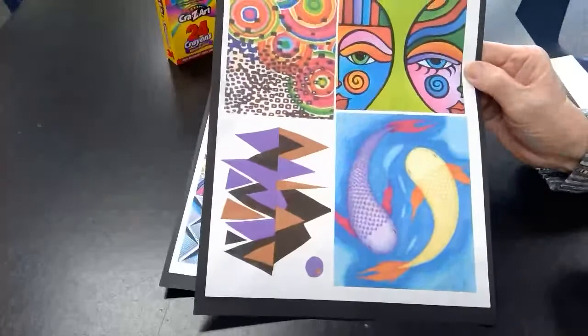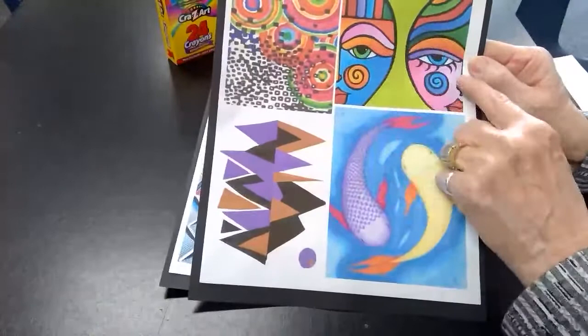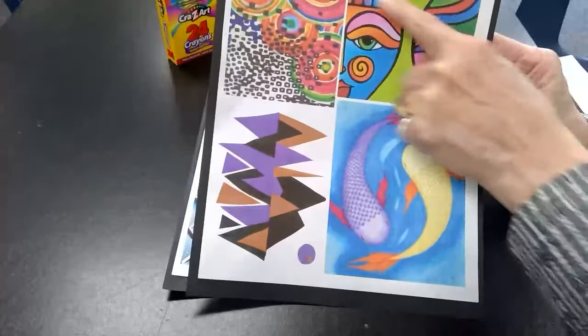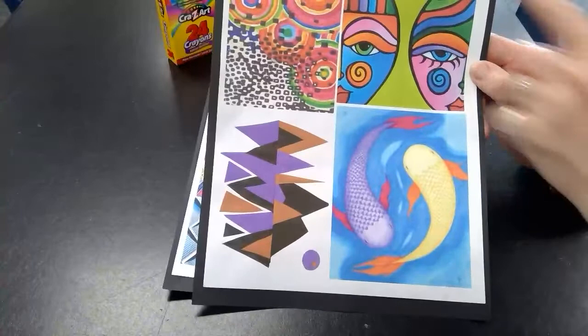This one right here is close to being the same, but if you look closely, the eyes are different, the colors are different, the lines are different. So it is balanced, but since it's a little bit different, it's called asymmetry or asymmetrical.